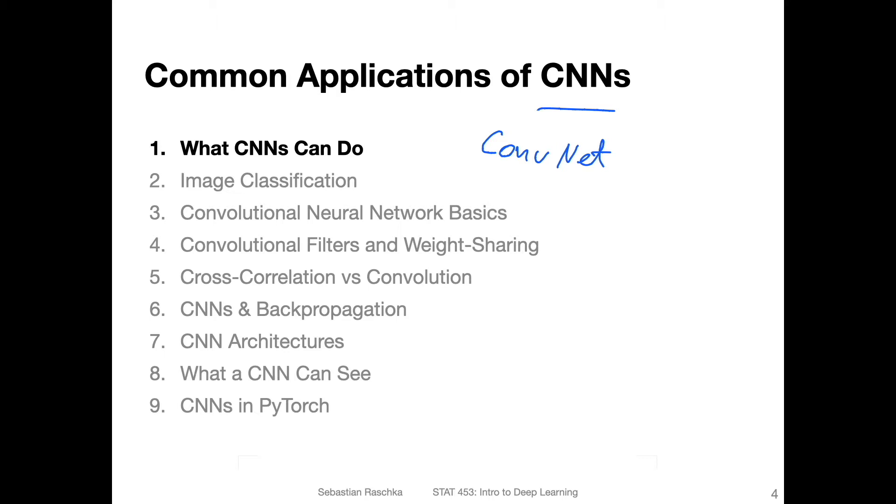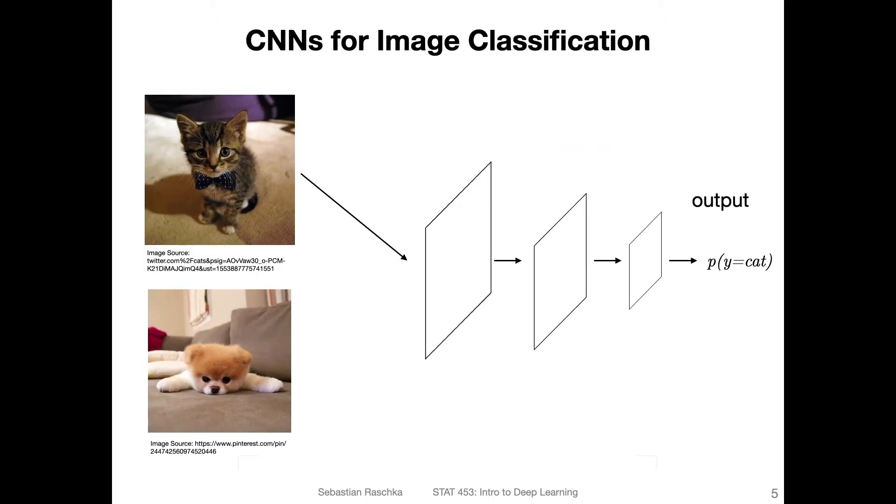Alright, so what can CNNs do? The simplest application of CNNs would be image classification. Here's an example of binary classification, similar to what we discussed for logistic regression, except now we have images as input instead of simpler, let's say flower classes. Here, that's the binary classification problem with cats versus dogs.